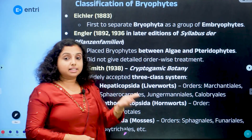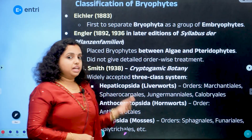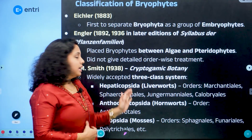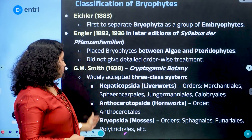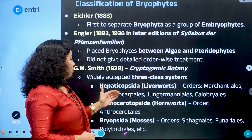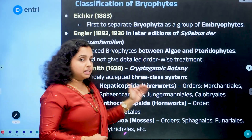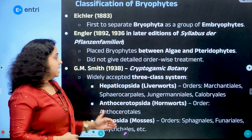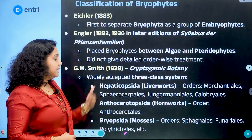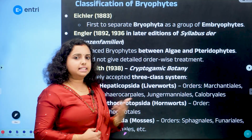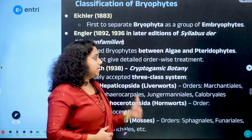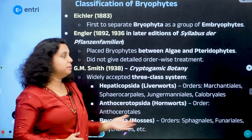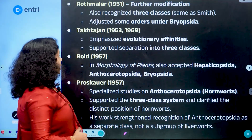This classification has a few elements that are important for the exam. We will focus on the first two classifications. The next part is Bryopsida's orders: Sphagnales, Funariales, and Polytrichales. This is a very detailed classification that is important from the exam point of view.